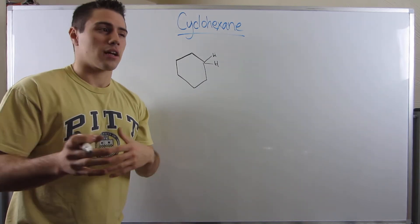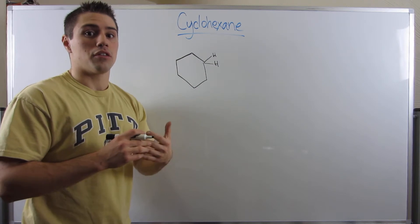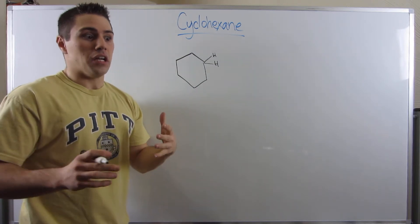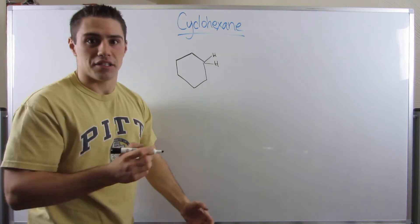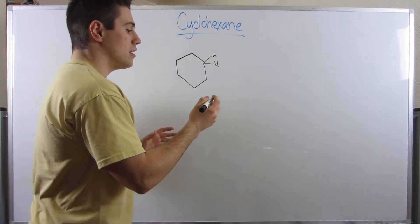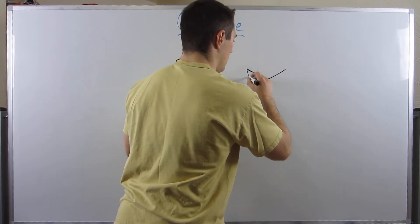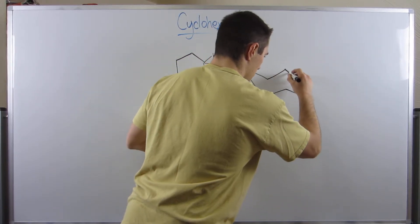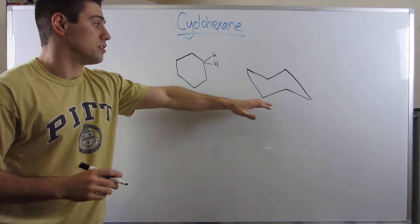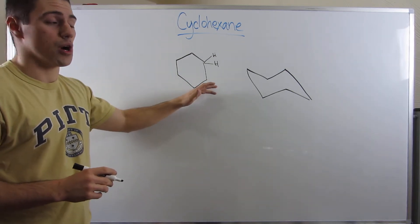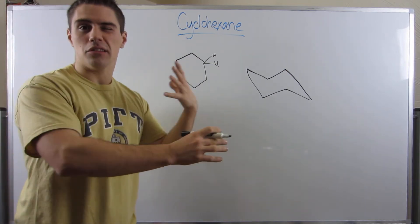I'm going to draw the chair conformation, explain why it's called that, and go through how to draw it — because at first it's like you don't even know how to make lines anymore; it's kind of weird to draw. Here's how you draw the chair conformation. It looks super funky, right? Looks nothing like the bond-line version, but rest assured, this is cyclohexane, just drawn a little differently.